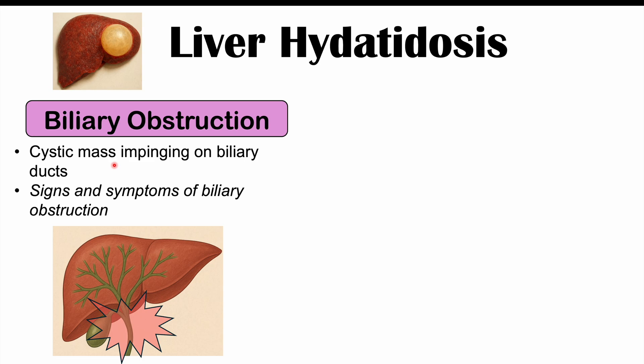Signs and symptoms of biliary obstruction include jaundice — a yellowing of the skin and whites of the eyes — and diffuse itching or pruritus. The itching occurs because bile salts, instead of being excreted into the small intestine, build up and spill into the blood, eliciting an itching sensation around different parts of the body.